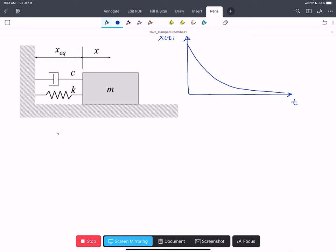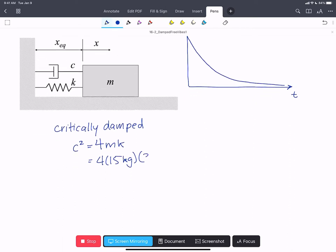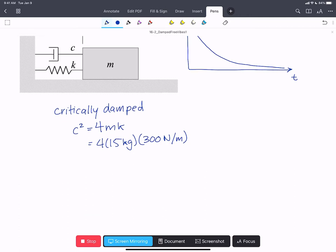We know that the definition of critically damped for a system like this is C squared equals 4mk. So 4 times 15 kilograms times 300 newtons per meter. And that gives us 18,000 newtons kilograms per meter.